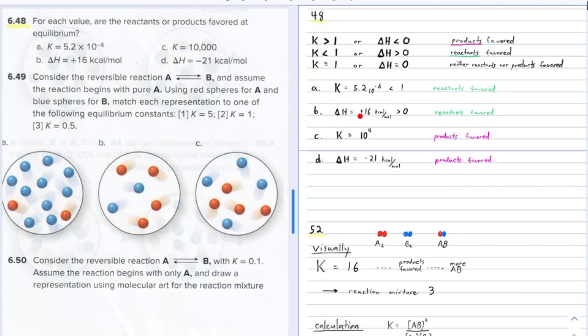For (b), the enthalpy change is positive 16 kilocalories per mole. Since it's an endothermic reaction, the reactants would be favored — you would not form that many products.